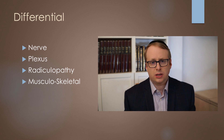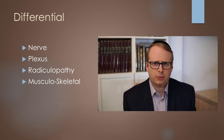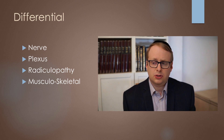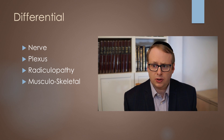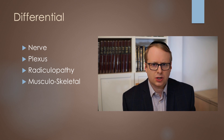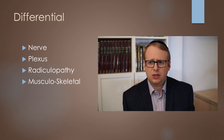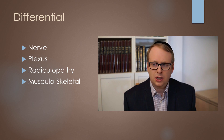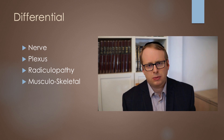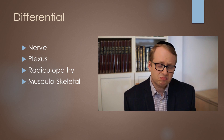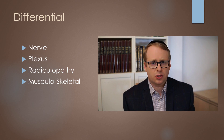Could it be an ulnar nerve problem? Well, again the distribution is not right, so if we think about an individual nerve it's difficult to put it all together. Let's think about something higher up — maybe some brachial plexus issue. Well, you'd need quite a widespread lower trunk plexopathy, and that really wouldn't be fitting with the clinical picture. Nothing really to suggest that on either the clinical examination or in terms of the symptom onset and progression. What about radiculopathy? There's not really any clear myotomal or dermatomal issue here that we can pinpoint. Or is it some kind of musculoskeletal issue? Not very clear — but let's start with the nerve conduction findings.